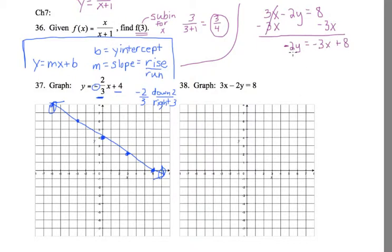Then I want to undo timesing by negative 2. So I divide each term by negative 2. That cancels here and we have y equals. A negative divided by a negative is a positive. I'm just going to leave that fraction though. 3 halves x. And then 8 divided by negative 2 is negative 4.